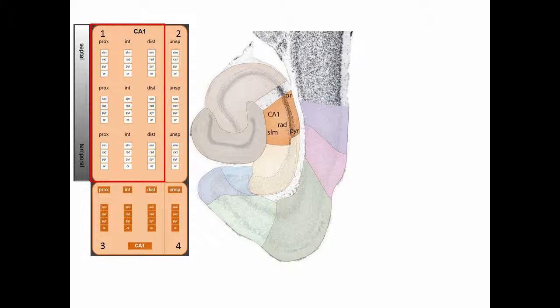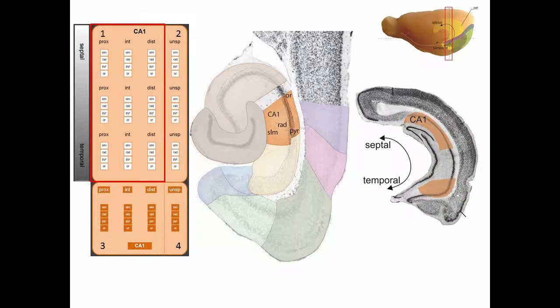Finally, information can be displayed along the septotemporal axis of CA1. In order to display this in the brain, we have to look in a coronal section. Information about the septotemporal axis in the CA1 area box is represented along the vertical direction.